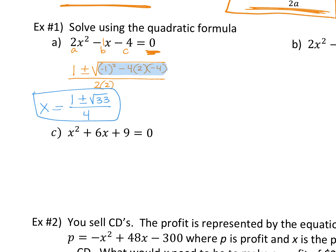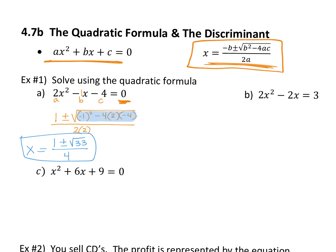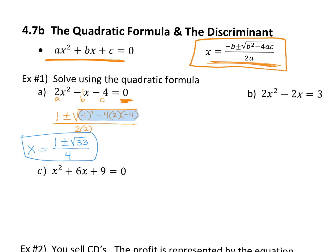Another fun fact: does anyone see an axis of symmetry? Look at this — negative B over 2A. Isn't that fantastic? The axis of symmetry is right there in the problem.